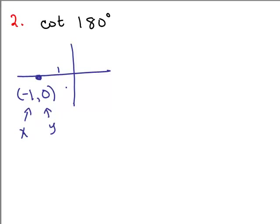But for the cotangent, it's reciprocal of the tangent. The tangent's y over x, so remember the cotangent is x over y, so it's negative 1 over 0. But what's negative 1 over 0? You can't leave an answer like that. You would say this is undefined, because you can't have a 0 in the denominator. So notice I'm putting my x over my y.